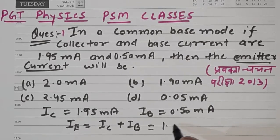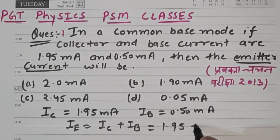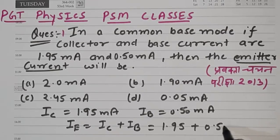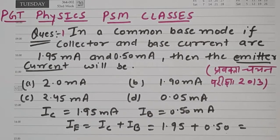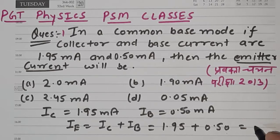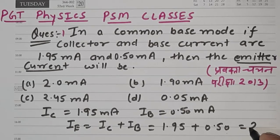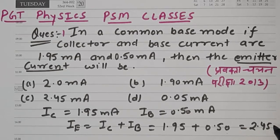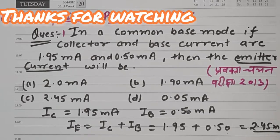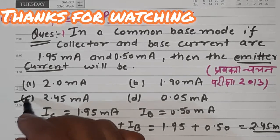So adding these values: 1.95 plus 0.50. When we add 1.95 and 0.50, we get 2.45 milliampere. That is our answer. So we can say that option C is the correct option.